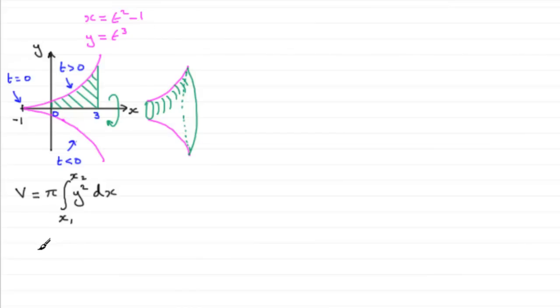What we do is write this as π ∫ y² (dx/dt) dt. By introducing dx/dt and dt, they almost cancel out, leaving y² dx like before. But because we're integrating with respect to t, the limits must change from x limits to equivalent t limits that correspond to x₁ and x₂—we'll call them t₁ to t₂. This is the approach for all volumes of revolution when integrating parametrically.